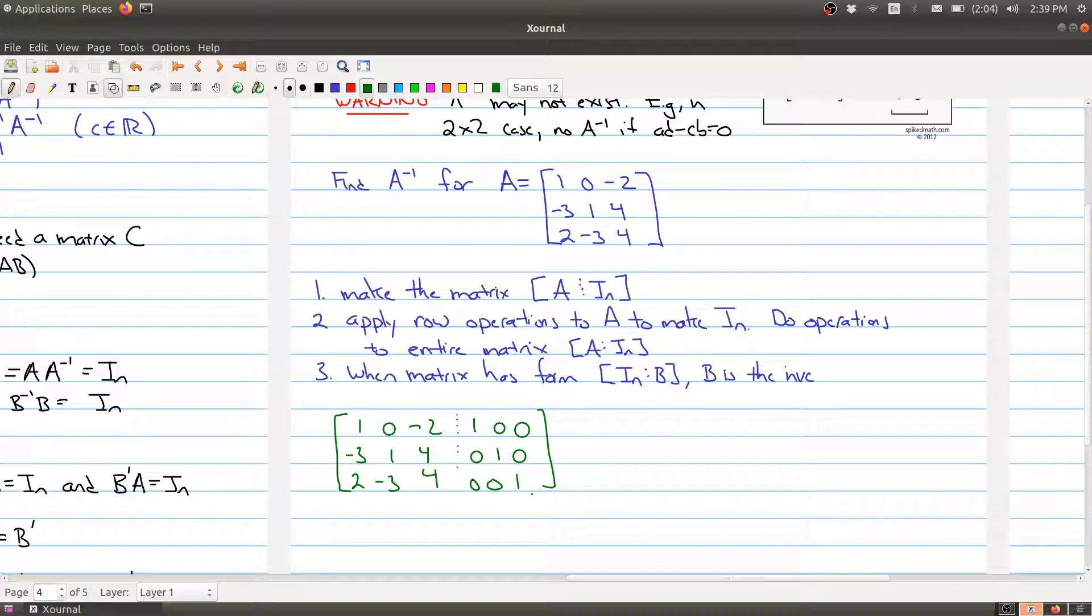Now what we're going to do is apply results way back from the first and second lectures, which were the row operations of A to make the identity matrix. So we're just going to try to do row operations and turn this side into the identity matrix. The key thing though is when we do these operations to this side, we're going to do it to the entire matrix, so we're going to be changing what's happening here. And when we make this side the identity matrix, there's going to be some numbers over here, and whatever those numbers are, this part over here will actually form the inverse.